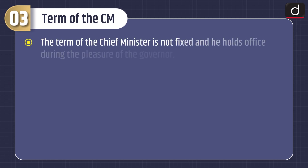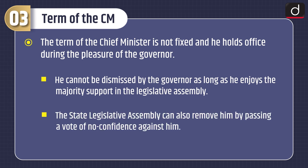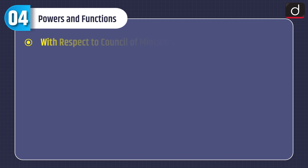Now let's discuss the term of the Chief Minister. The term of the Chief Minister is not fixed, and he holds office during the pleasure of the Governor. He cannot be dismissed by the Governor as long as he enjoys majority support in the legislative assembly. The state legislative assembly can also remove him by passing a vote of no confidence against him.